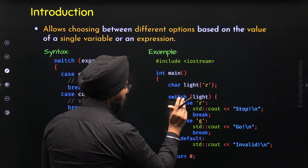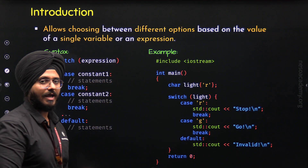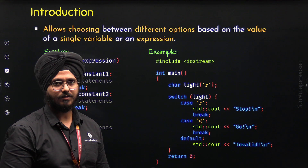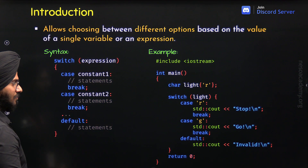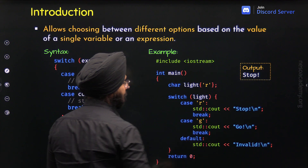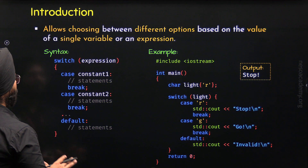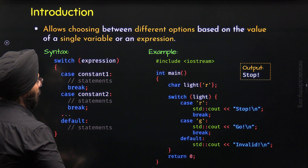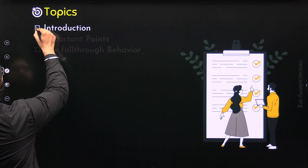If the break statement is not available, then the subsequent cases will also execute — this might not be an intentional behavior. When we execute this program, we know we will get the output as 'stop'. With this, we have understood the concept of switch and know where we use it. We are done with the introduction to the switch statement.